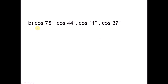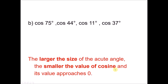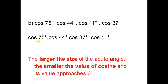For part B, we have cosine 75°, cosine 44°, cosine 11°, and cosine 37°. From the previous video, we learned that the larger the acute angle, the smaller the value of cosine. Since we want to start with the smallest cosine value, we start with the largest angle. So the ascending order is: cosine 75°, cosine 44°, cosine 37°, cosine 11°.